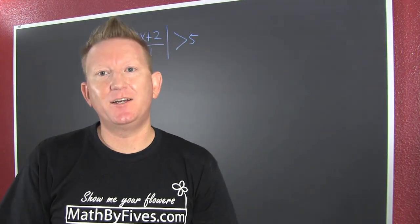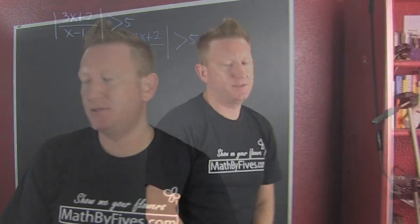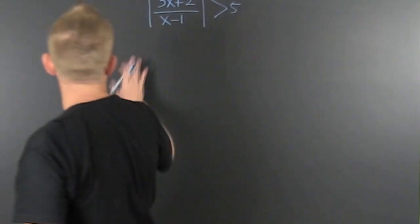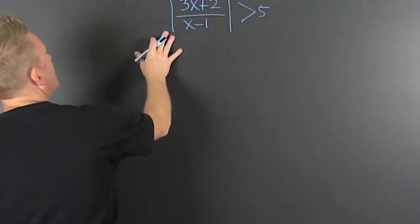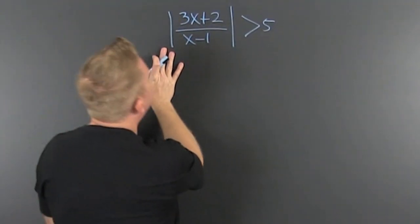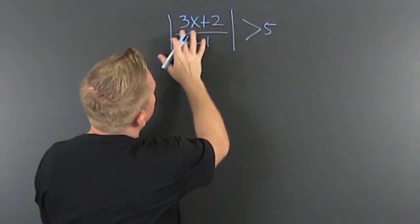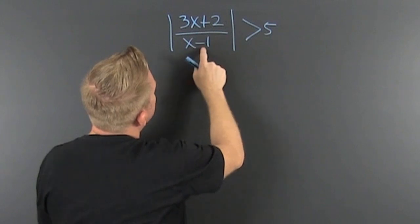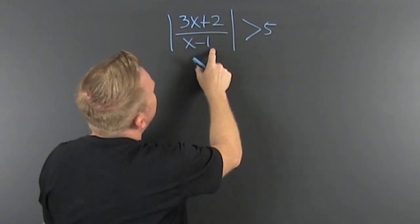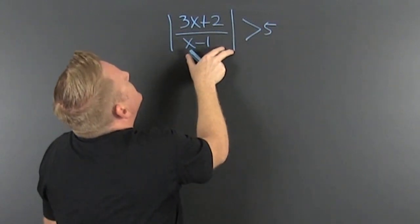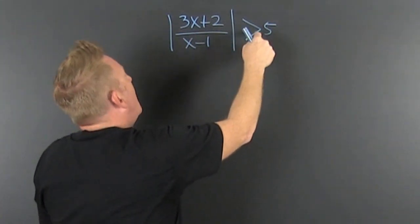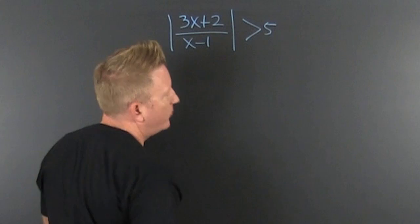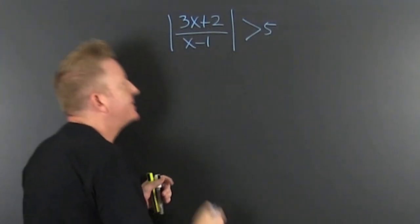Rational inequalities. We're dealing with this: (3x + 2) divided by (x - 1) is absolutely bigger than 5.